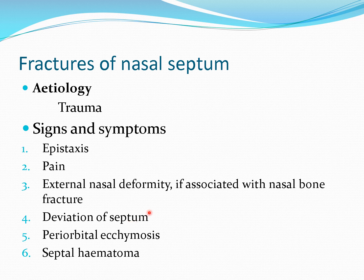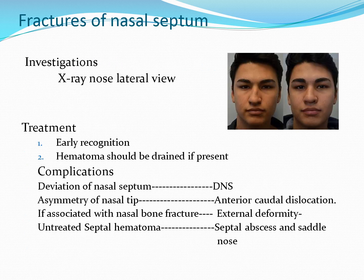Nasal fracture can lead to development of septal hematoma, which is a collection of blood beneath the mucoperichondrium. To diagnose nasal septum fracture clinically, when you look inside the nasal cavity there will be a deflected nasal septum. You can also advise X-ray nose lateral view to see nasal bone fracture as well as fracture of the nasal septum.